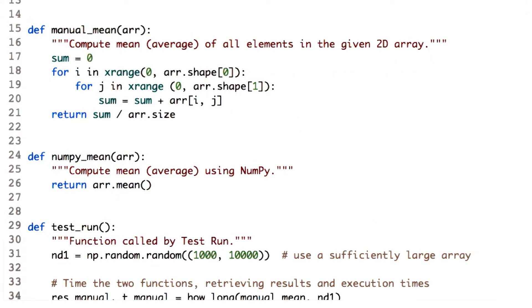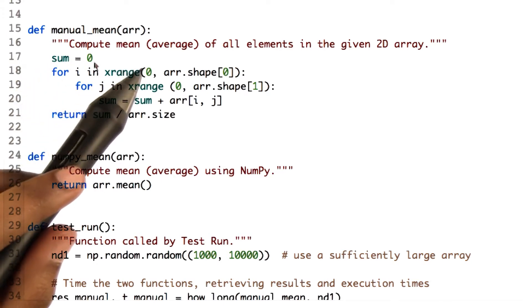Moving ahead, we will be comparing how to compute mean of the array using NumPy and using standard iteration. Here is the manual mean function, which computes the mean of the values in the defined array.